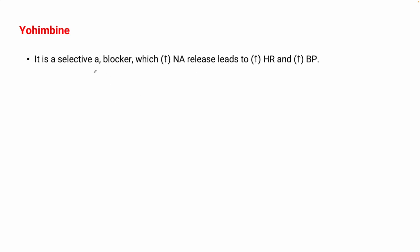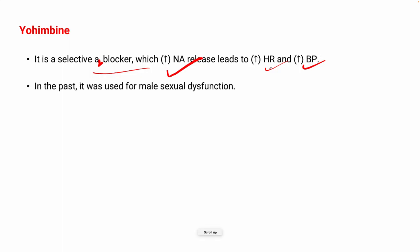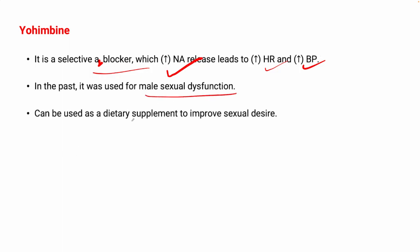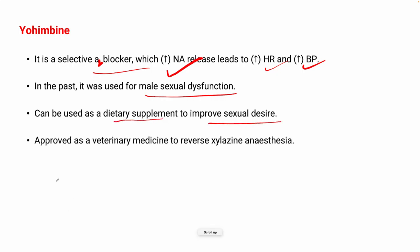Yohimbine is a selective alpha-2 blocker that increases noradrenaline release, leading to increased heart rate and blood pressure. In the past it was used in male sexual dysfunction; now it is used as a dietary supplement to improve sexual desire and is also approved in veterinary medicine to reverse xylazine anaesthesia.